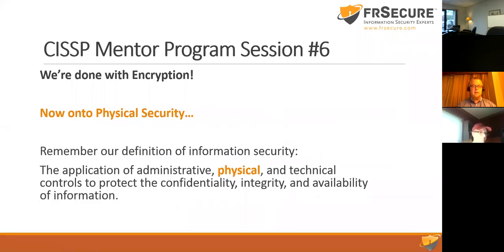Now moving to physical security — described as probably the easiest domain to relate to because it involves things you can see and touch. On the risk assessment side, technical controls are easiest to assess; physical controls, despite being tangible, are actually the most difficult to assess because so many factors affect likelihood and impact: crime rate, natural disasters, and data sensitivity.